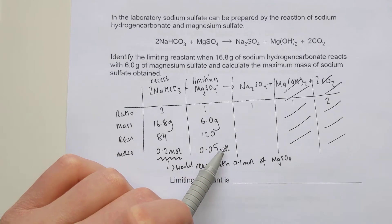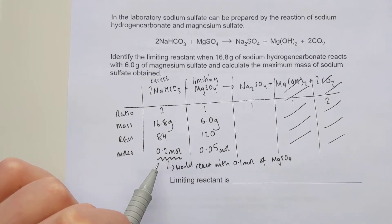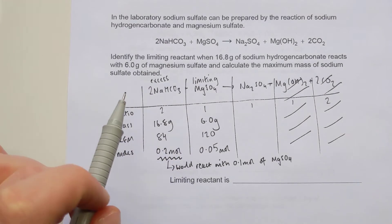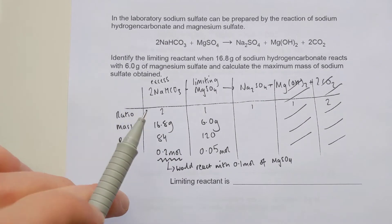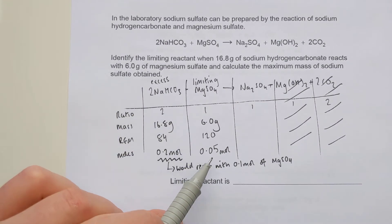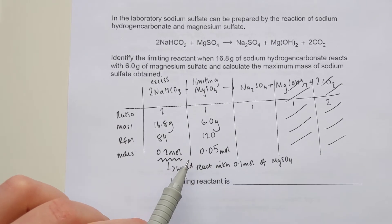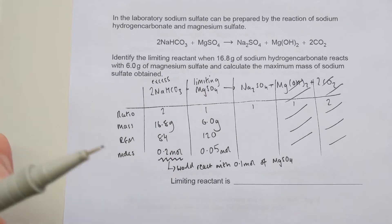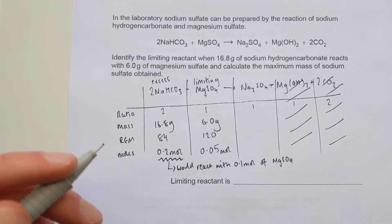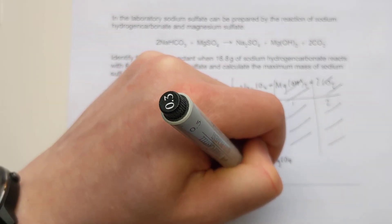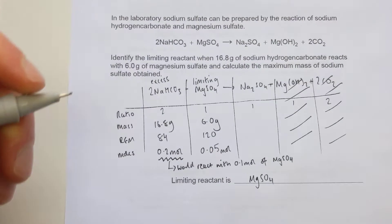You could do the same thought process for the sodium hydrogen carbonate, but you only need to do it once. A little exam tip though: if in doubt, just pick the smaller one. In a lot of cases that will still be true and you'll still get the marks. If you get it wrong by guessing, you only need one mark out of the five, so if you get stuck just pick the smaller one. The correct answer for this one: the limiting reactant is magnesium sulfate, which gets you three marks of the five.